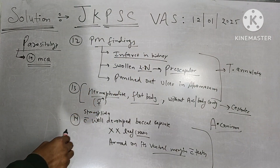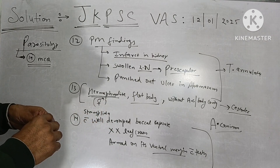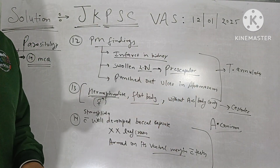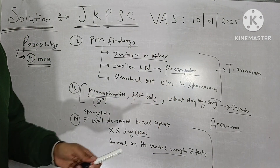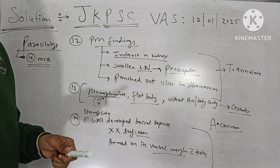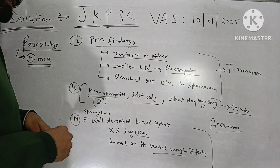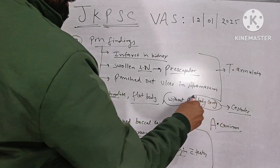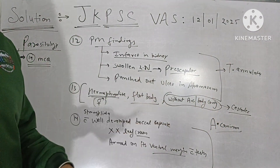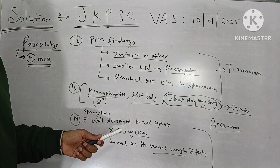Number 13 had morphology given: a parasite that is hermaphrodite, bisexual, having a flat body, and without any elementary canal or body cavity. The answer is cestode, because a flat body is present in cestodes and trematodes, not in nematodes which have a round body. The key distinguishing point is without elementary canal — cestodes lack an elementary canal.